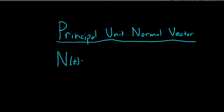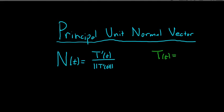N of t is equal to the derivative of the unit tangent vector divided by the magnitude of the unit tangent vector. Recall the unit tangent vector is given by the derivative of the position vector divided by the magnitude of the derivative of the position vector. So what does this all mean intuitively and graphically?